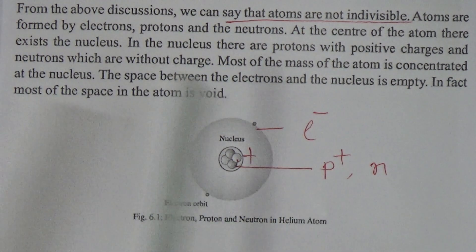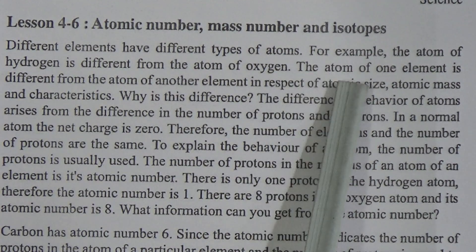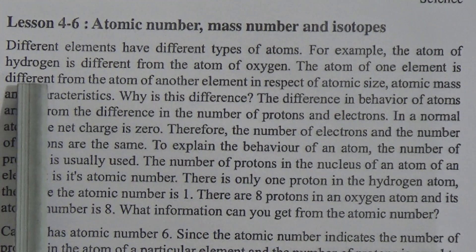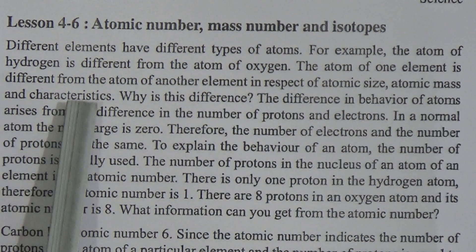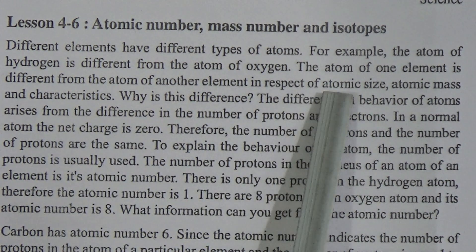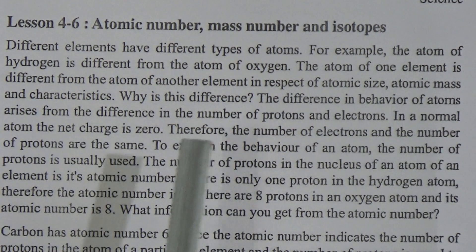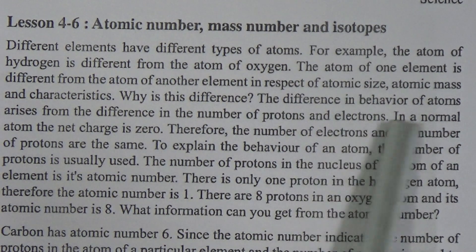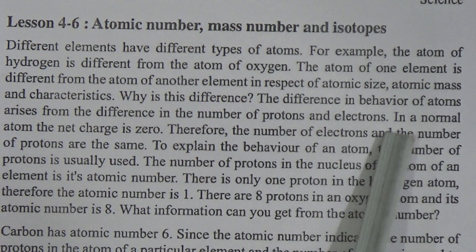Now go to the next topic: atomic number, mass number and isotopes. Different elements have different types of atoms. For example, the atom of hydrogen is different from the atom of oxygen, and atoms of different elements differ in respect of atomic size, atomic mass and characteristics. The difference in behavior of atoms arises from the difference in the number of protons and electrons.